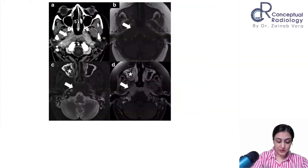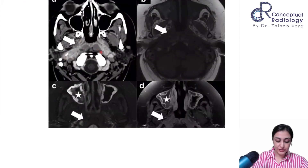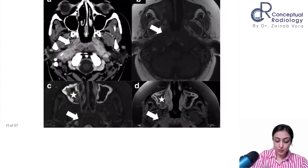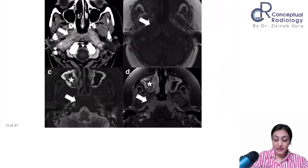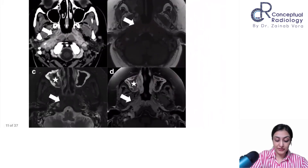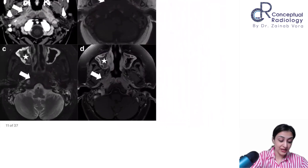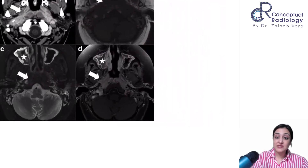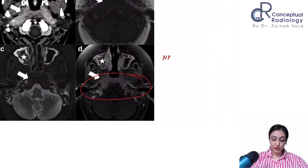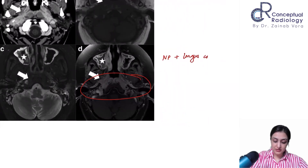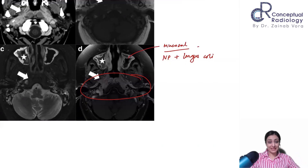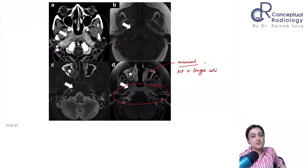A nice case showing diffuse infiltrative nasopharyngeal involvement, with the longus colli muscles also infiltrated. This is skull base or nasopharyngeal involvement — very T2 hypointense infiltrative tissue showing enhancement on CT. Paranasal sinus involvement is also seen with associated mucosal thickening.